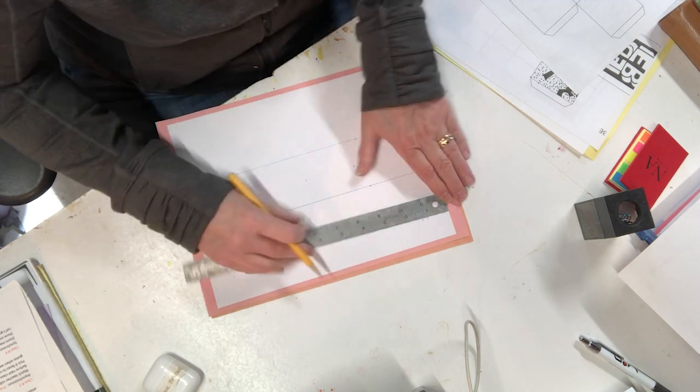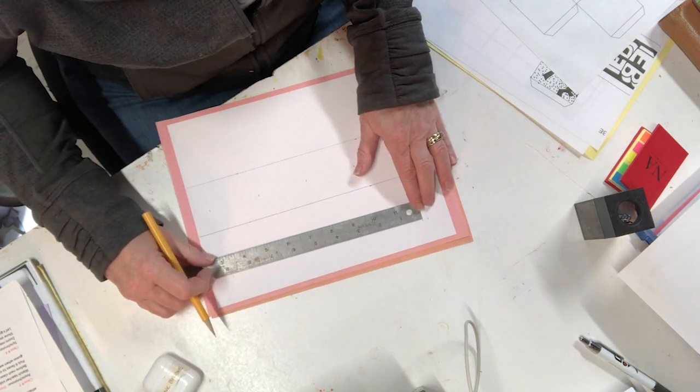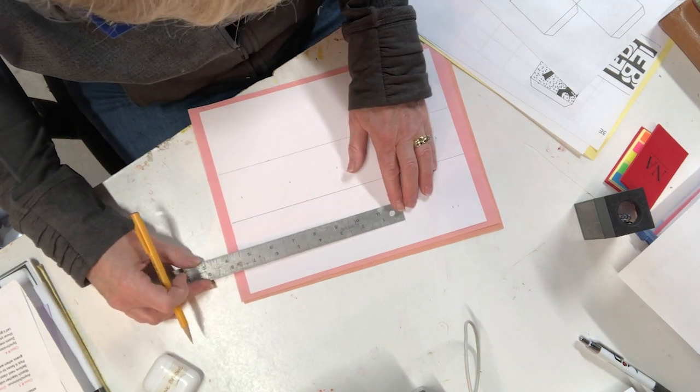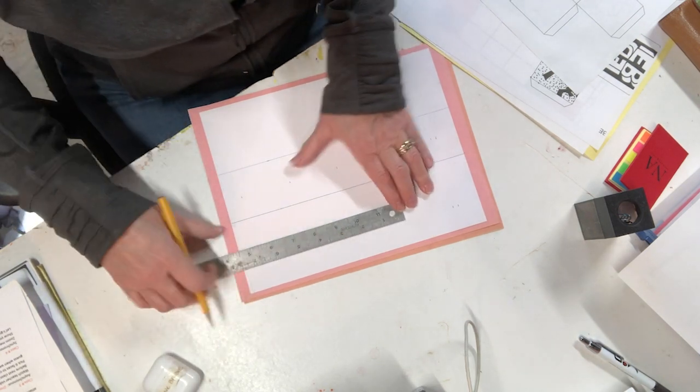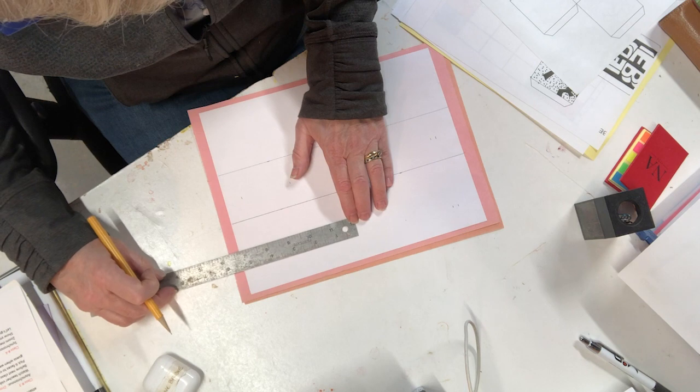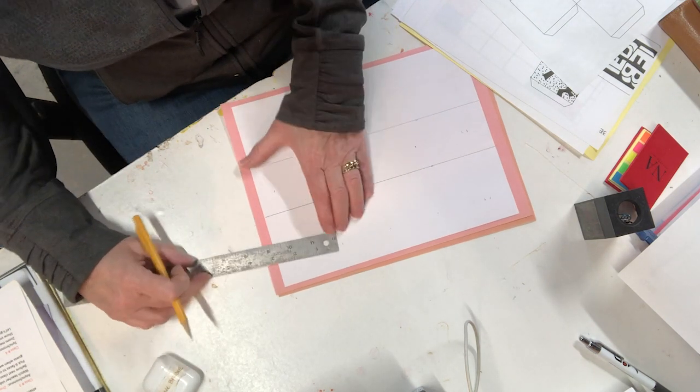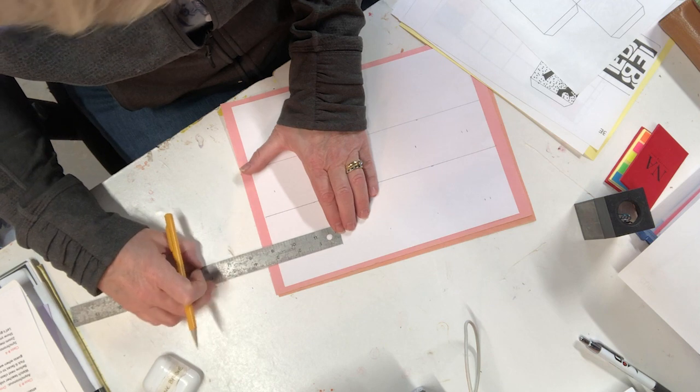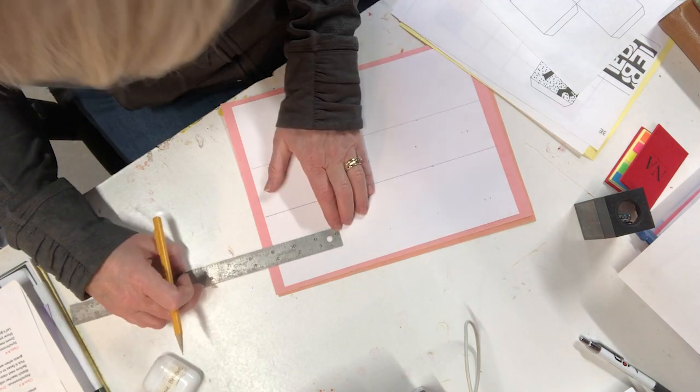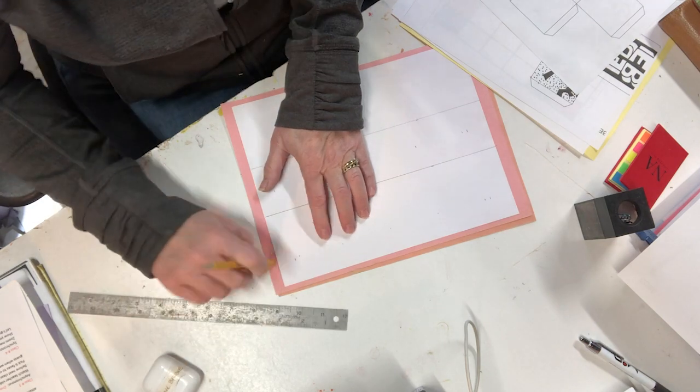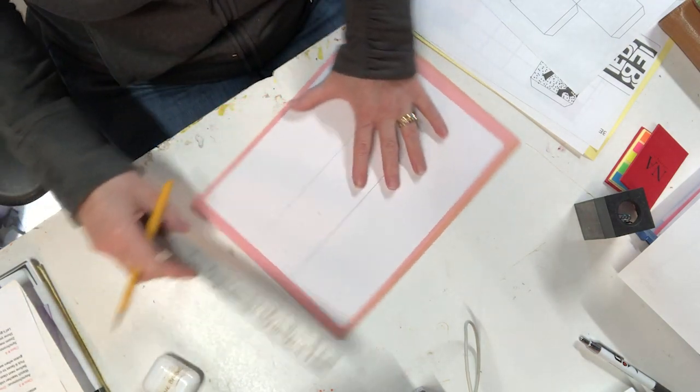Then a quarter, and then I'm going to line up my ruler and go two and a quarter, line up my ruler at the edge and go two and a quarter, and line it up again two and a quarter. I need one more box, two and a quarter.